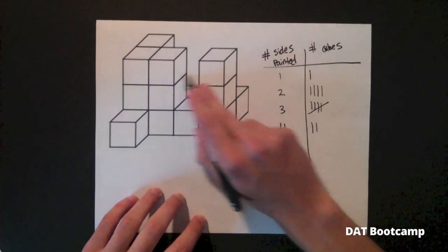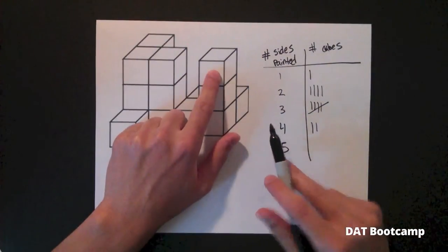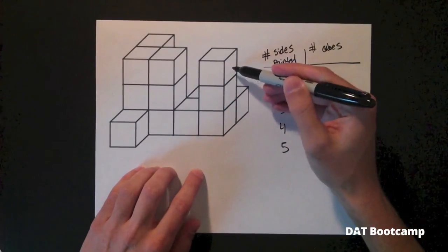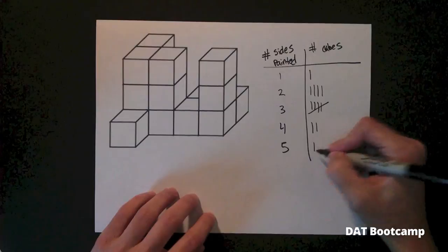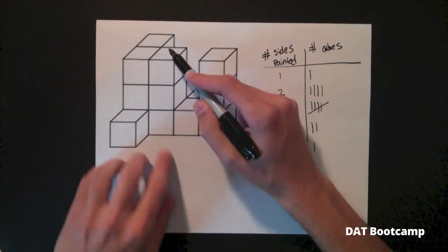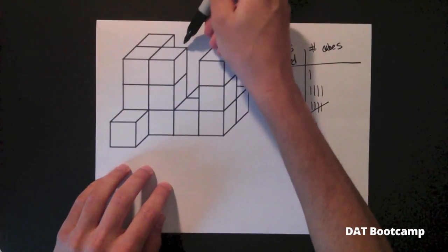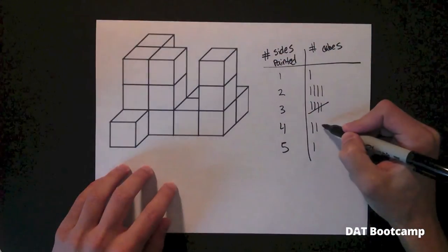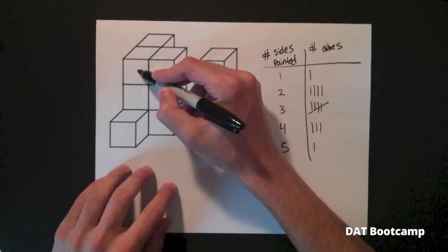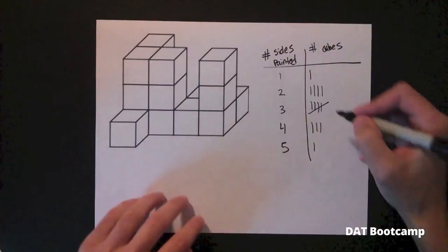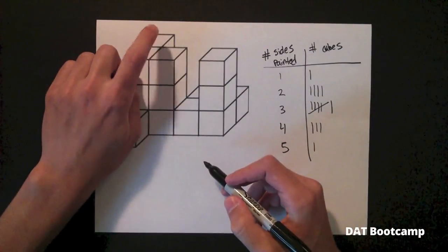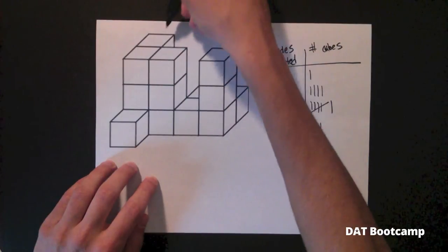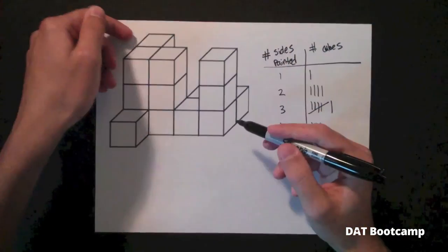Let's move on to the third and final layer. Starting at this cube: one, two, three, four, and five sides painted. The next: one, two, three from the back, and four from the right. Then: one, two, three. And finally, the last cube has one side painted, two from the right, three from the back, and four from the left.